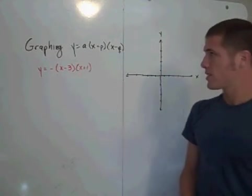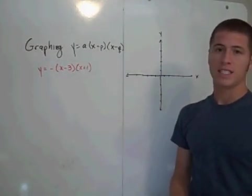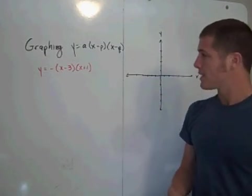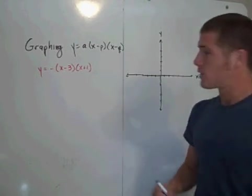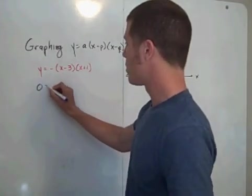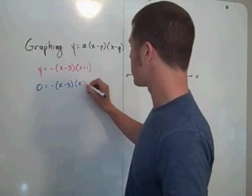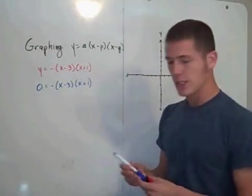And the reason why this is called intercept form is because it's easiest to graph the x-intercepts first. And the x-intercepts are where the y value is equal to 0. So if you set y equal to 0, we have negative x minus 3 times x plus 1 is equal to 0.